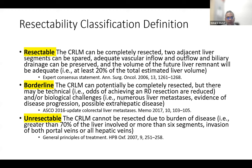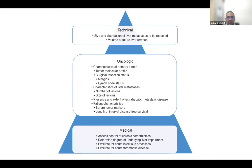Borderline cases may also involve biological disease issues — too many lesions, disease progression after chemotherapy, or potential extra-hepatic disease. Unresectable means very extensive liver involvement where safe resection is impossible or would result in R2 resection. When a patient is deemed resectable or borderline, assessment covers medical fitness, oncologic issues, and technical considerations.